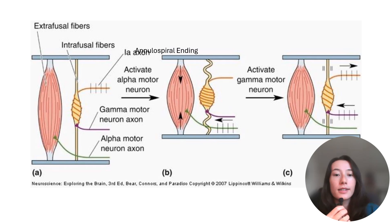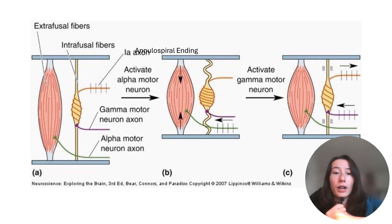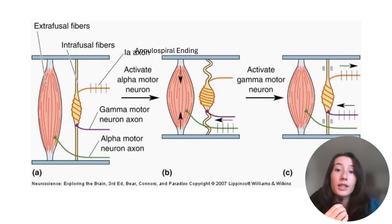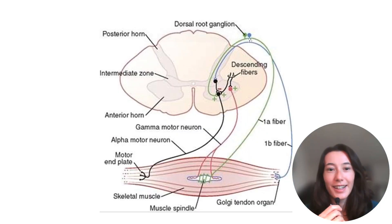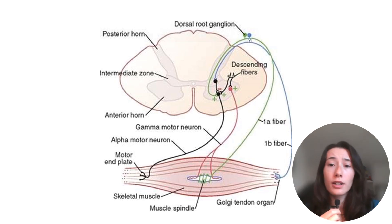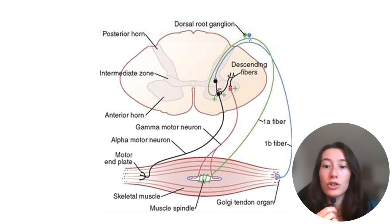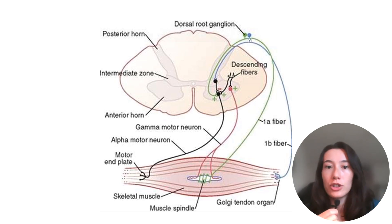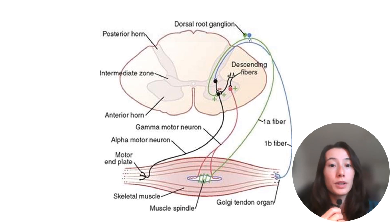Why this matters is because our body wants to protect itself. I would rather know that someone is yanking my arm within one second than within three seconds — it's a protective mechanism. Now, before we start talking about the slide, there are a few things worthy of clarification. Number one, when you look at the screen and find where it says the 1B fiber, this 1B fiber is with respect to the GTO — the Golgi tendon organ. This is not something we're talking about in this lecture, so please just disregard it.